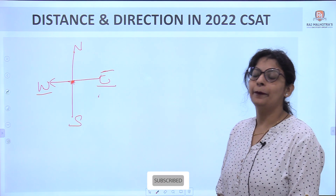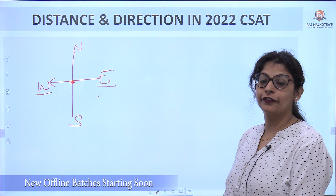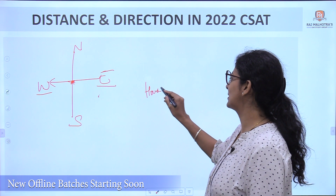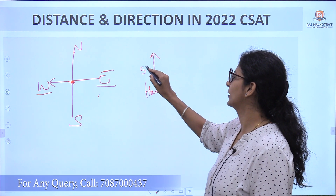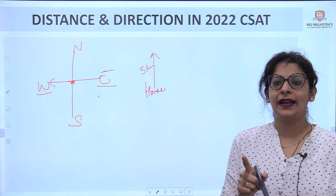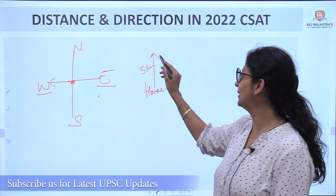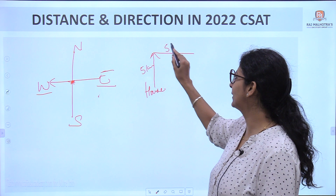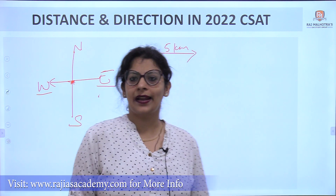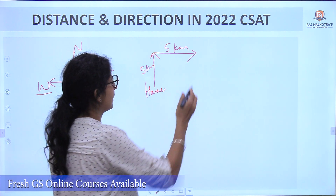Let's take an example. A person starts walking North for 5 kilometers from his house. Then he takes a right turn — be careful while marking right or left turns. He is facing North, so his right turn is towards the East. He walks 5 kilometers East, then takes another right turn and walks 5 kilometers — now moving in the South direction, so his right turn takes him downwards.